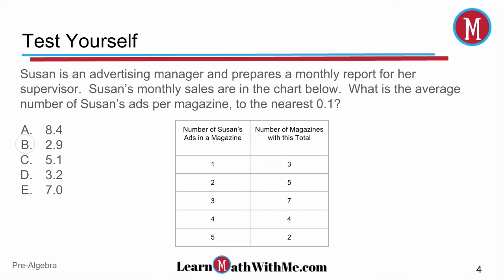The answer to test yourself is B, 2.9. Let's take a look at it. Susan is an advertising manager and prepares a monthly report for her supervisor. Susan's monthly sales are in the chart below. What is the average number of Susan's ads per magazine to the nearest 0.1 or tenth position?